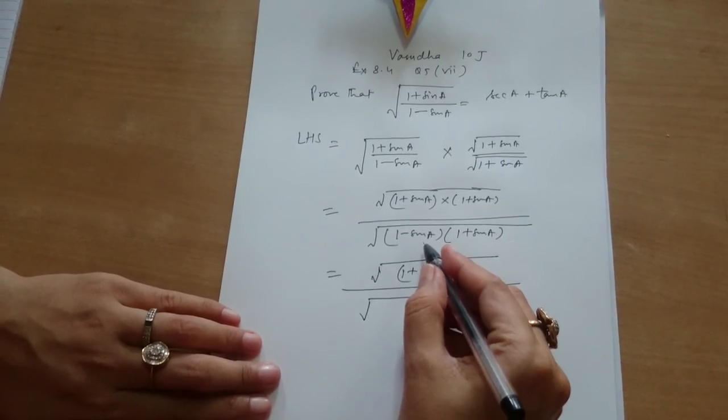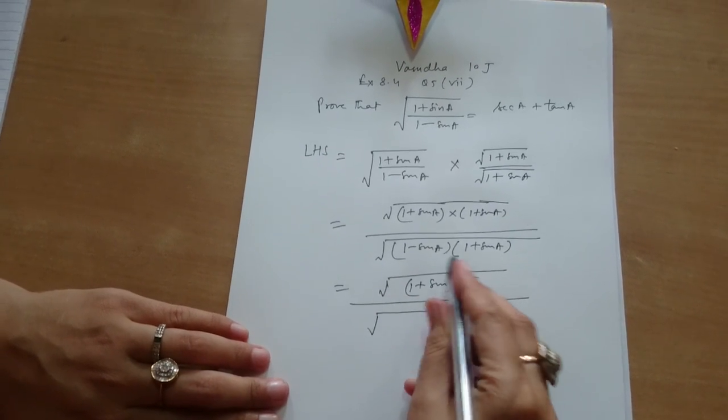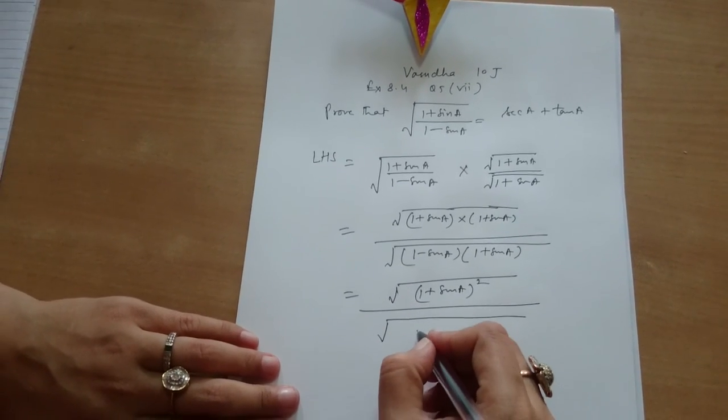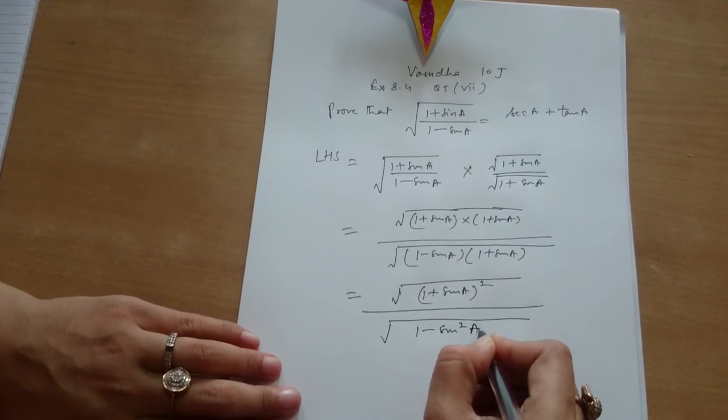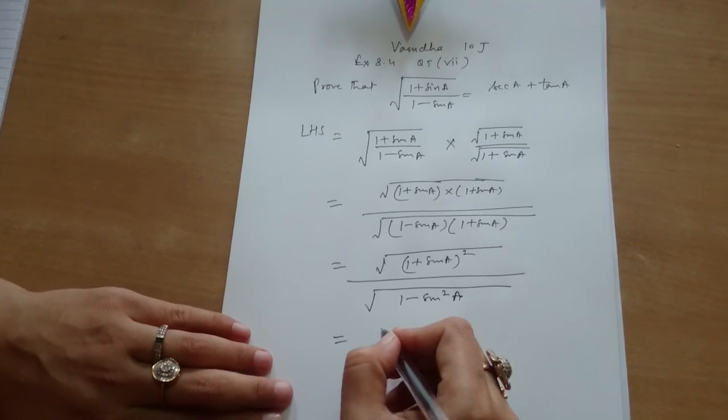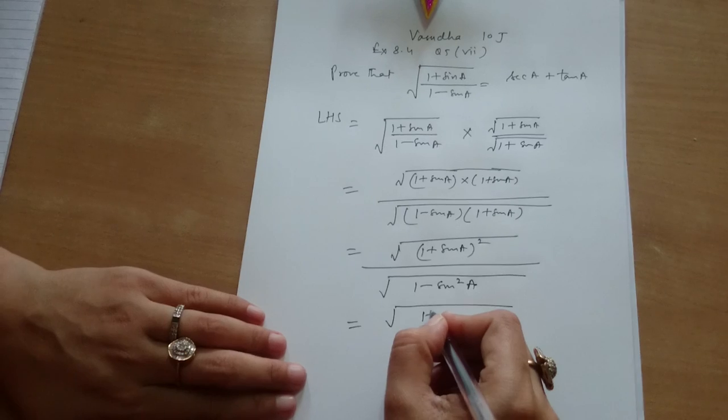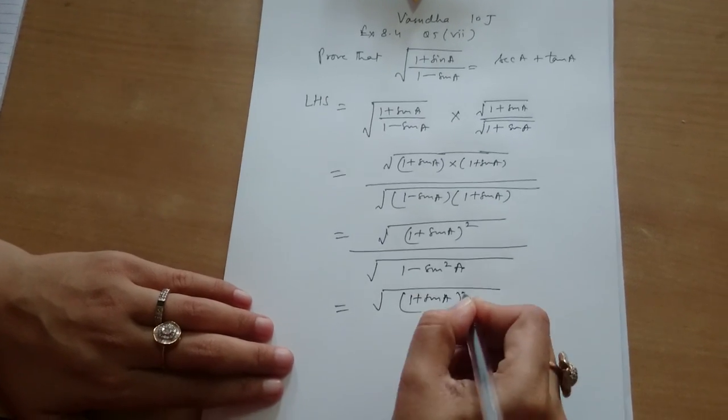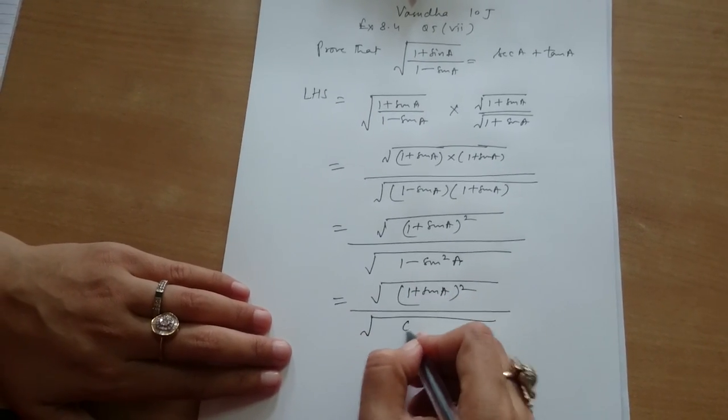First you have to write down. We are using identity. 1 minus sin A into 1 plus sin A is 1 minus sin square A. This is equal to under root of 1 plus sin A whole square divided by, what is 1 minus sin square A? It is cos square A.